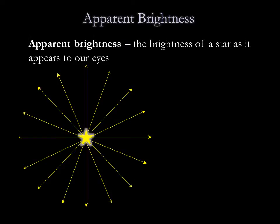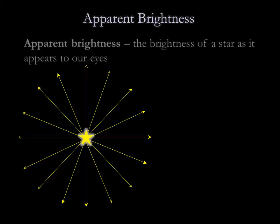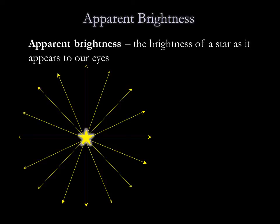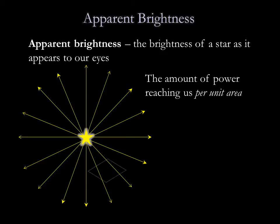Because two similar looking stars can be generating very different amounts of light, we need to distinguish clearly between a star's brightness in our sky and the actual amount of light that it emits into space. A star's apparent brightness is how it appears to our eyes.